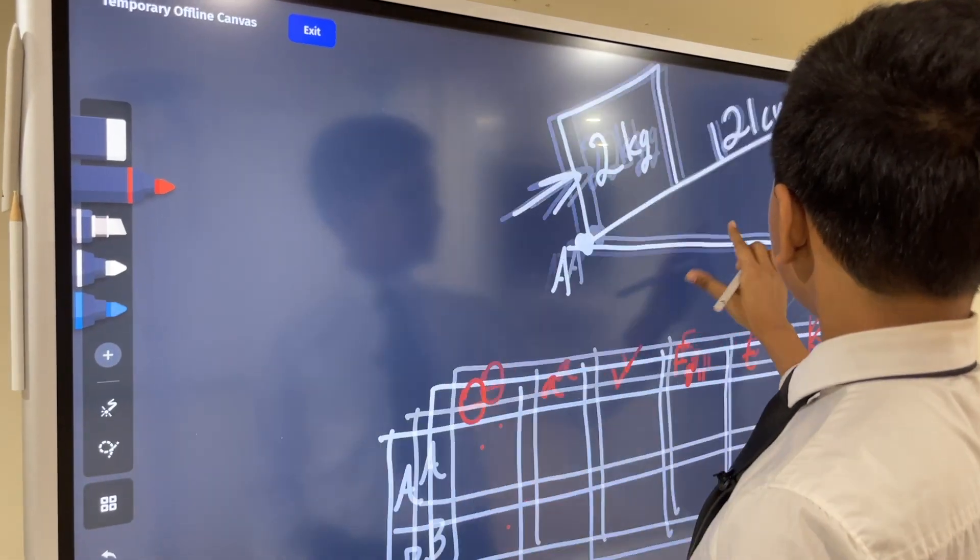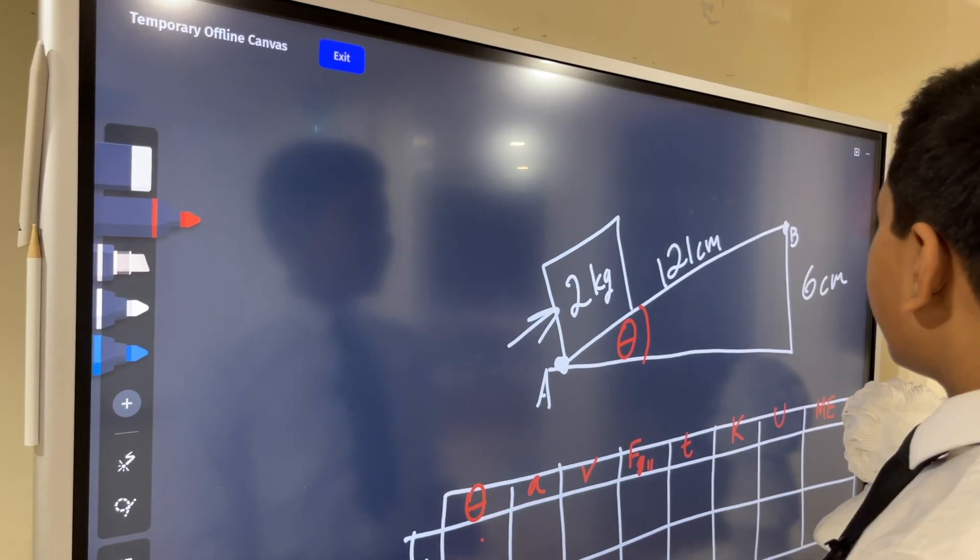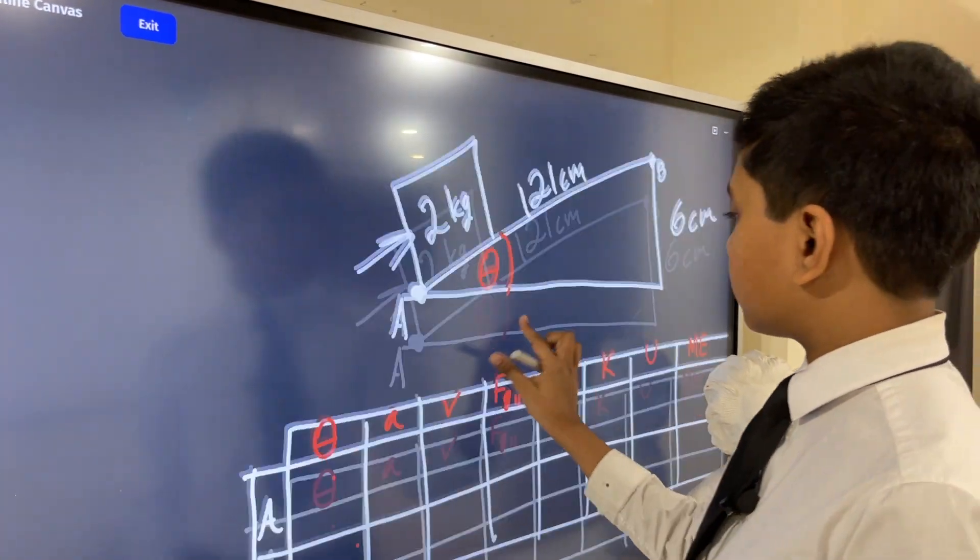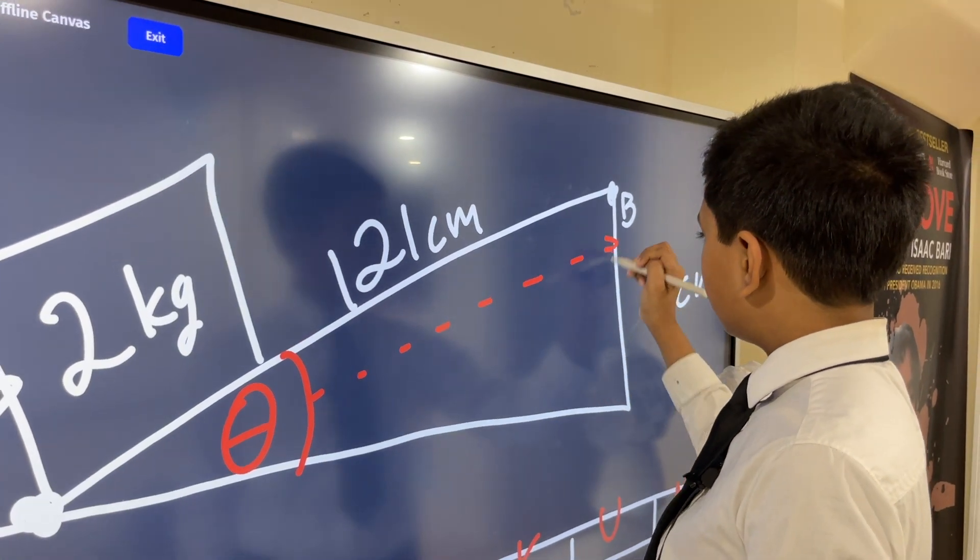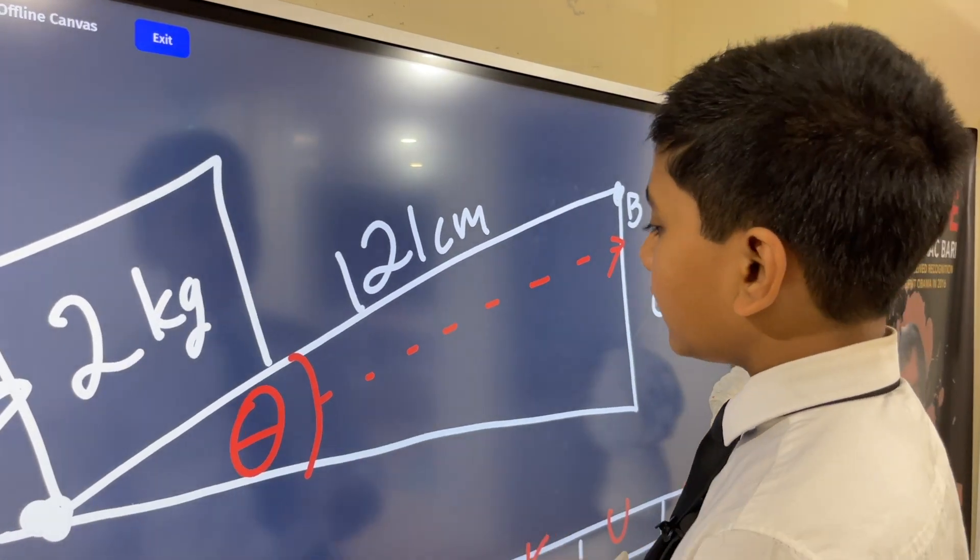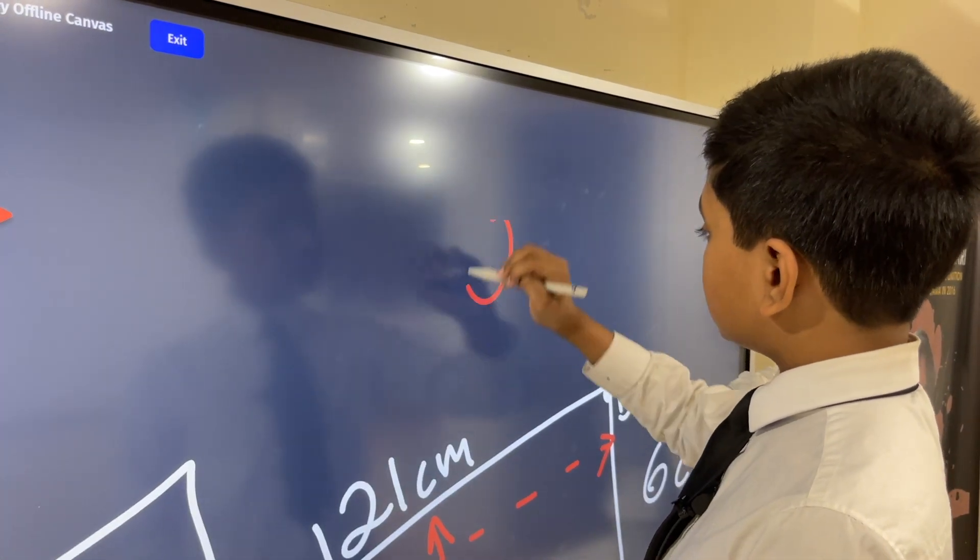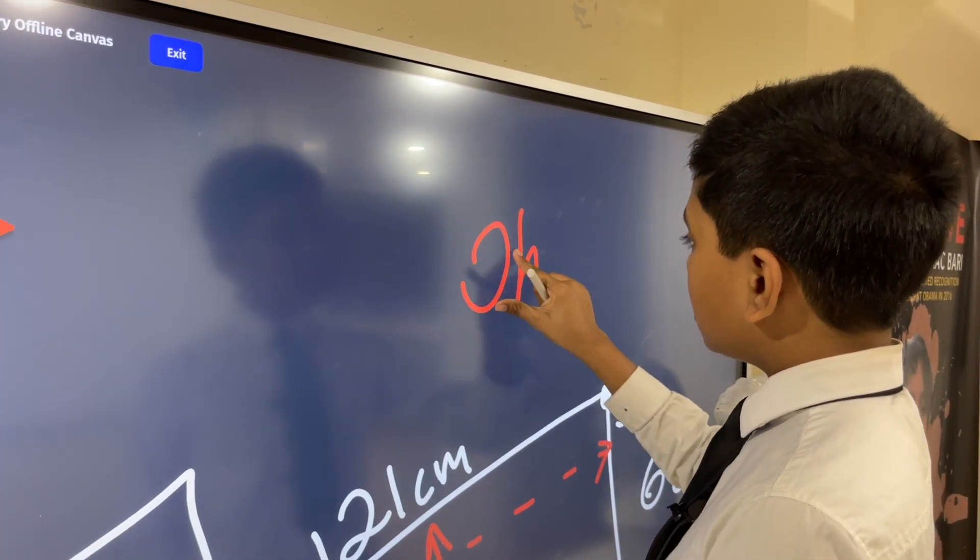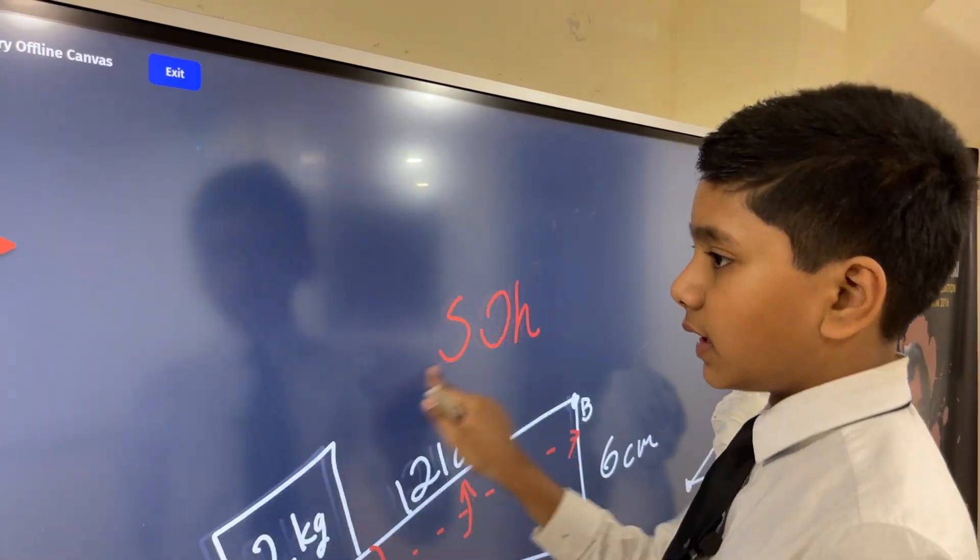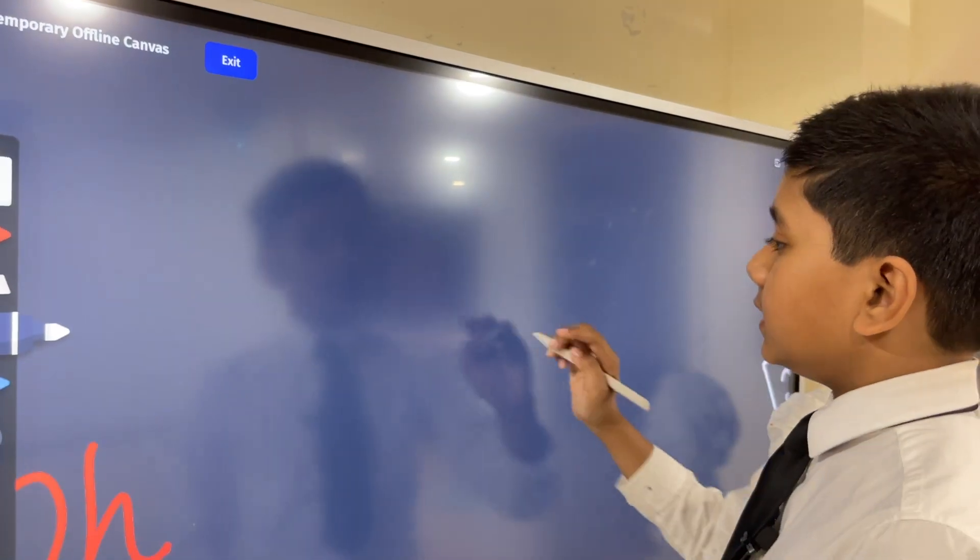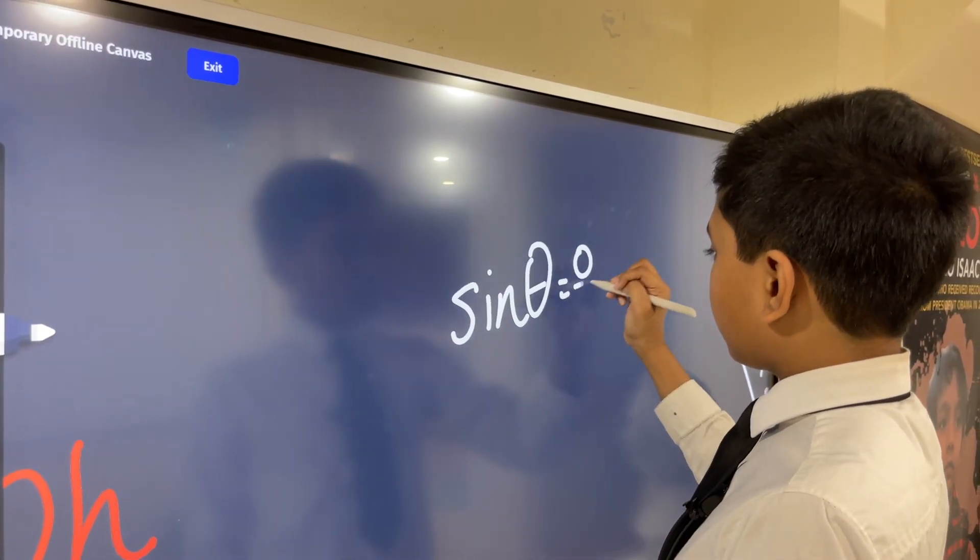We can calculate theta, which is the angle of this incline, by simply using some trigonometry. Specifically, we have the opposite side to this angle, and we have the hypotenuse. With the opposite side and the hypotenuse, we can use sine theta to complete the entire thing. Specifically, sine theta is equal to opposite over hypotenuse.